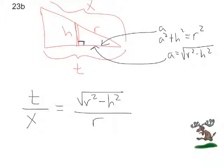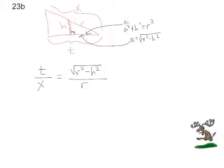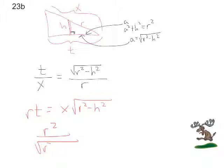And we want to solve this equation for x. So we're going to cross multiply, and we'll get Rt is equal to x times the square root of R squared minus H squared. And then divide the square root. I made a mistake there. Let me erase that. That should be Rt. There we go. Equals x.